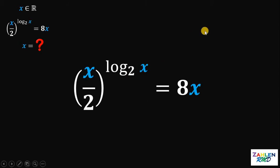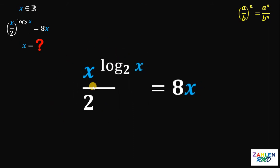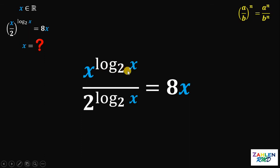Let's start with this law of exponents. If we have a over b raised to n, it is equivalent to a raised to n, all over b raised to n. Therefore, the left-hand side of our equation is equivalent to x raised to logarithm of x to the base of 2, all over 2 raised to logarithm of x to the base of 2.